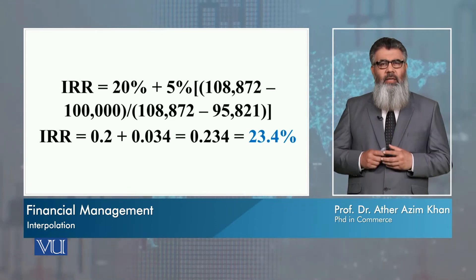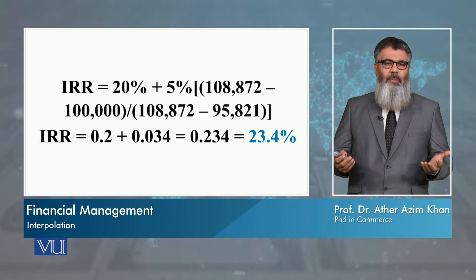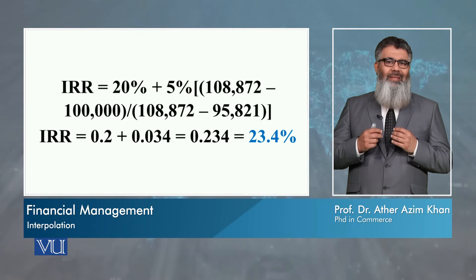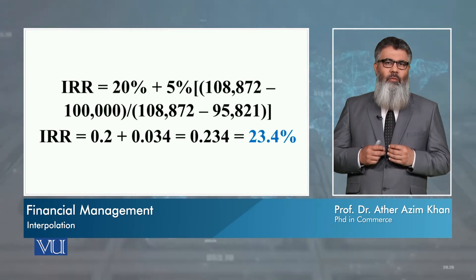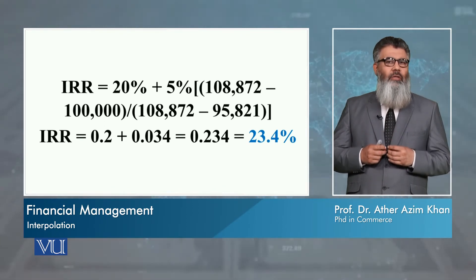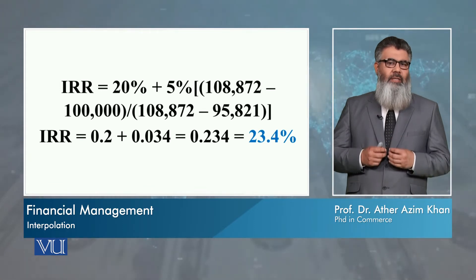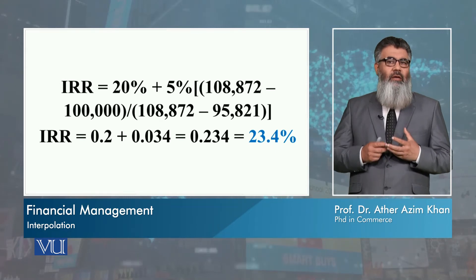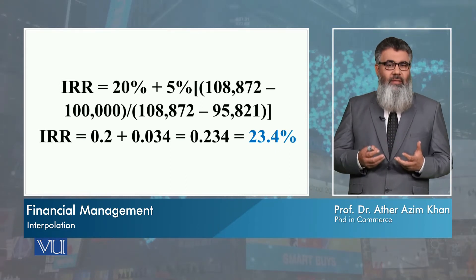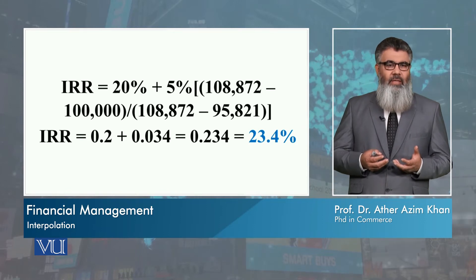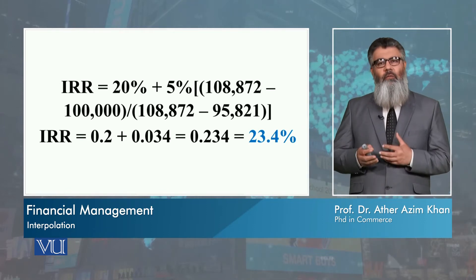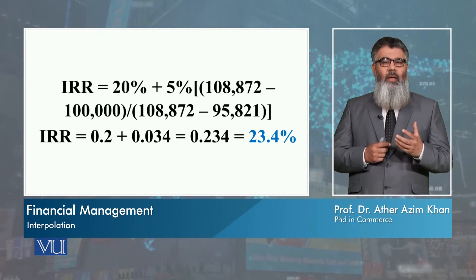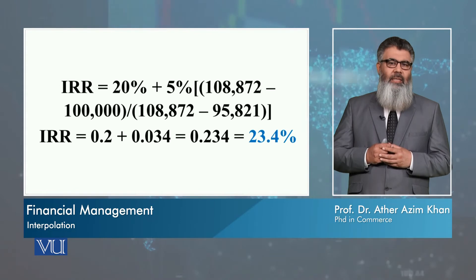In this particular case, that 5% will be multiplied by a fraction. The numerator of that fraction is the difference between the present value of cash inflows at the lower rate — which is 108,872 at 20% — and our outflow of 100,000. That difference is 8,872.